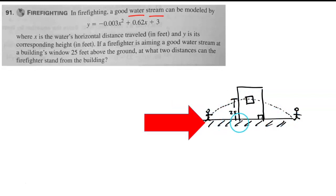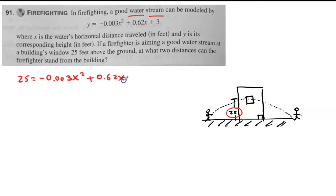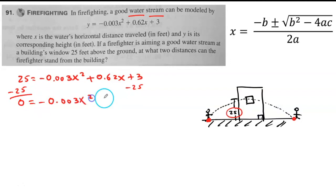They're aiming at a window 25 feet above the ground. What are the two x distances, the horizontal distances? But they're giving me the y. They give me the 25 for a reason. Because I need to plug it in here. That's my height. So I'm going to have 25 equals negative 0.003x squared plus 0.62x plus 3. To find the x values where he's standing, I need to use the quadratic formula again. But before I can apply this, my quadratic equation has to be equal to 0. Therefore, I have to subtract 25 on both sides.